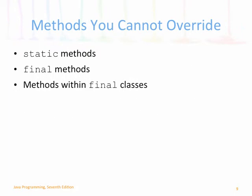Methods you can't override: you can't override static methods — static means a method exists when no objects of the class exist, so overriding static methods doesn't make any sense. We can't override final methods, because final means you can't change this — if we allowed overriding of final methods, they could be modified later, and we don't want that. We also can't override methods inside final classes. If a class is declared as final, that means it's constant and not going to change.